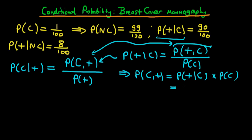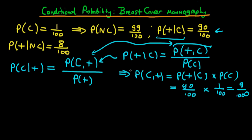Both of these we know. P(positive | cancer) is 90 over 100, and P(cancer) is 1 over 100. Putting these together, the joint probability of having cancer and testing positive is 9 over 1000. That's the numerator.